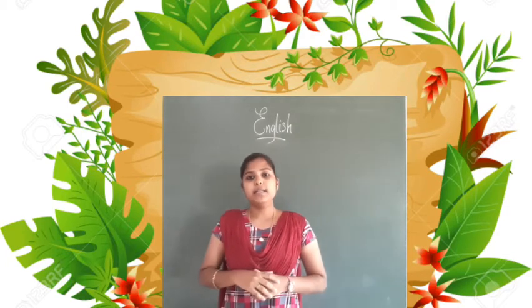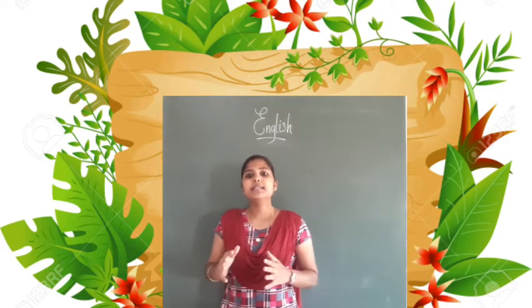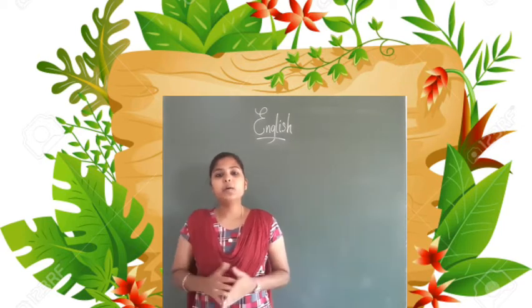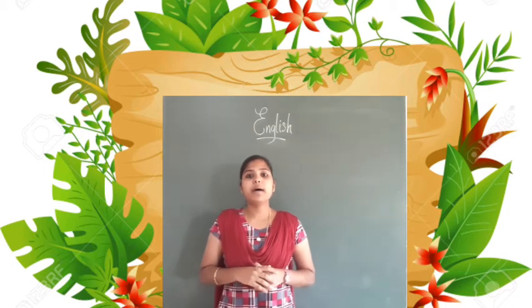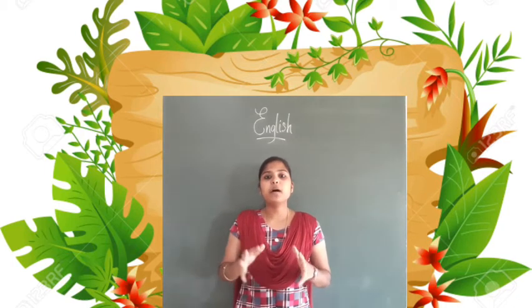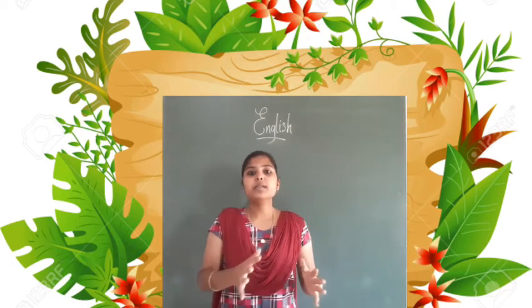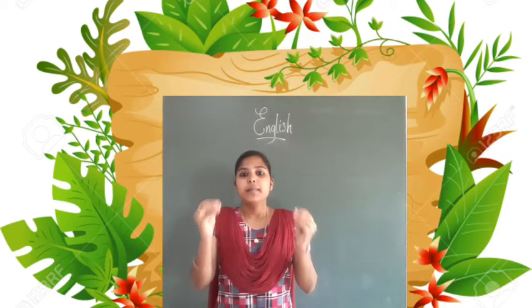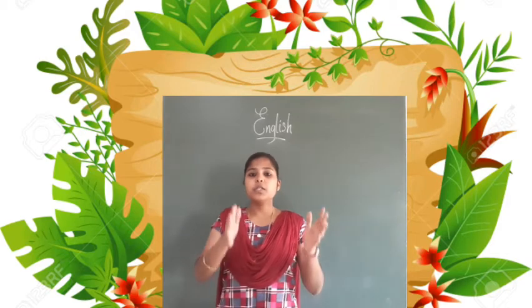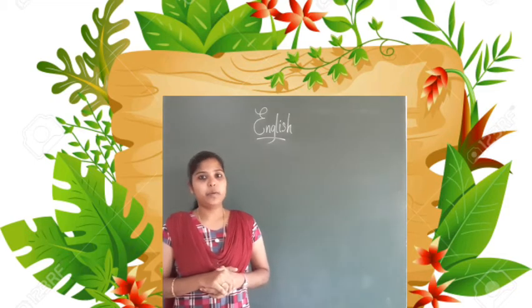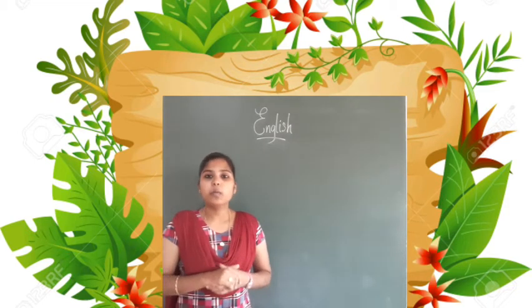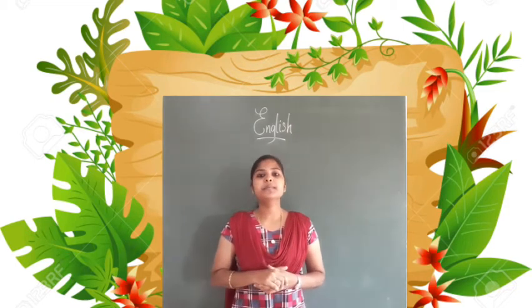We have already learned about this in the writing skill — that is poetry writing. In this poem, the poet Elizabeth Coatsworth talks more about things, animals, or processes which are happening very quickly, and also about things which are happening slowly, yet they are beautiful.